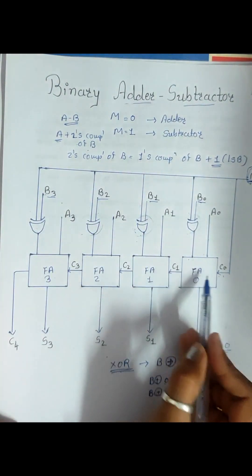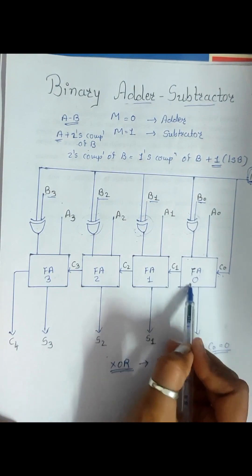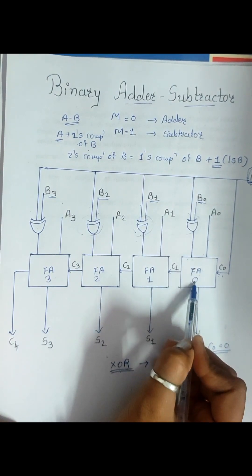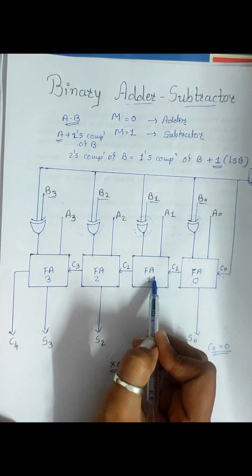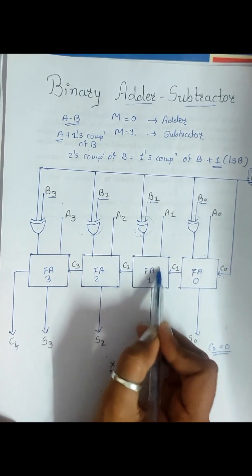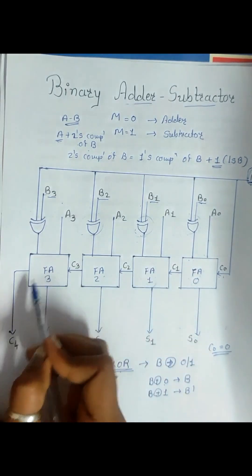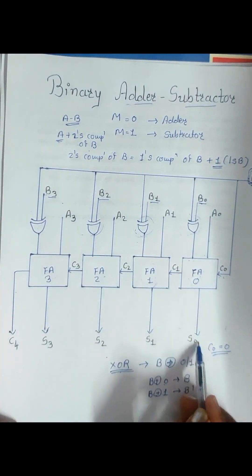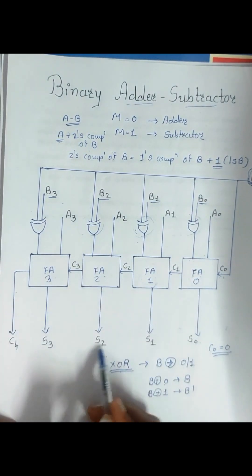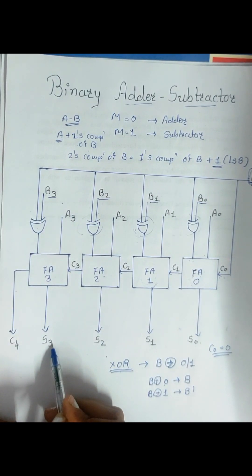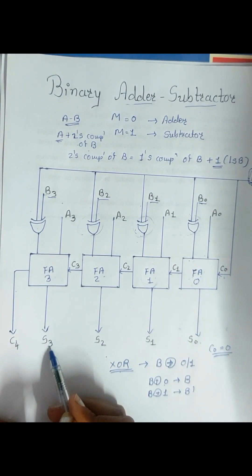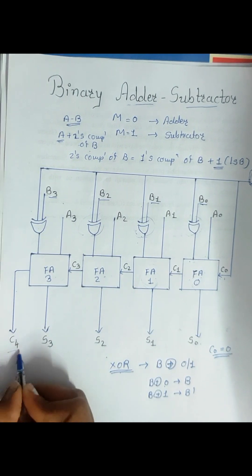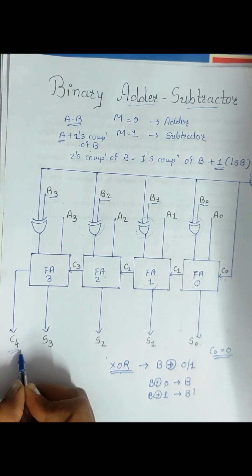The output carry of the 0th full adder is given as the input carry for the 1st full adder, and so on. S0, S1, S2, and S3 are the sum outputs — the answer of the addition or subtraction operation. C4 is the final carry.